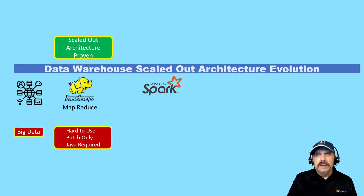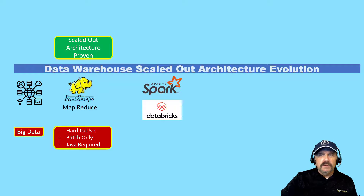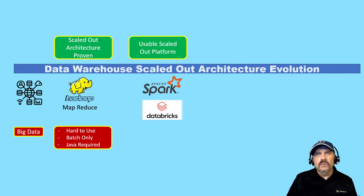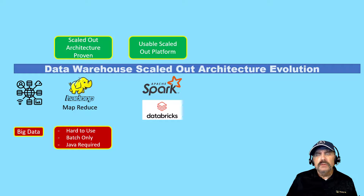So along came Apache Spark, another open-source project. Apache Spark can really be seen as Hadoop done right — they solved a lot of these problems. What Apache Spark did right off the bat was provide a usable scaled-out platform. I put Databricks there because the founders of Databricks wrote Apache Spark, and not surprisingly, they still maintain most of the open-source code for Apache Spark. So it's important to realize there's this connection.